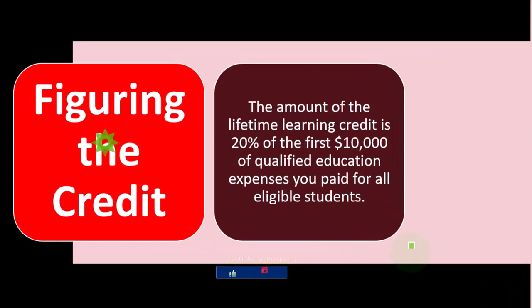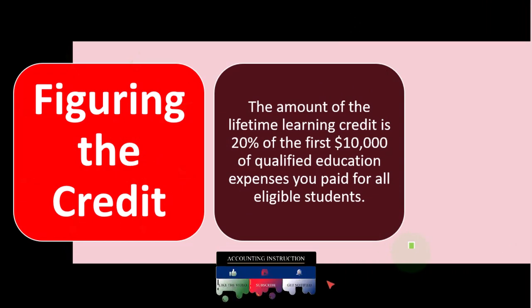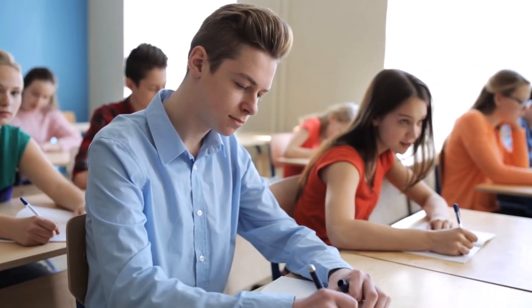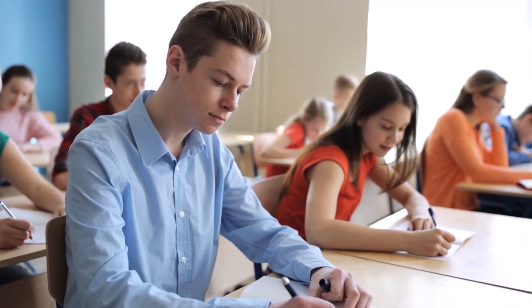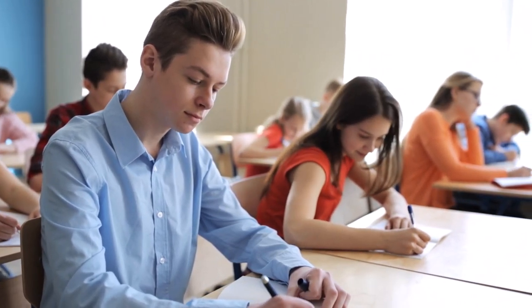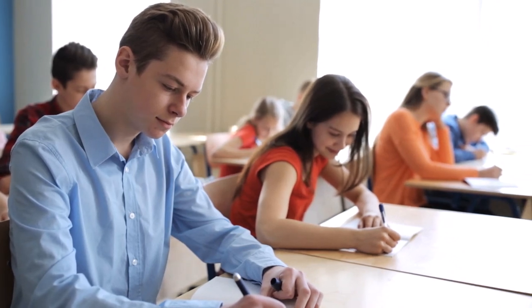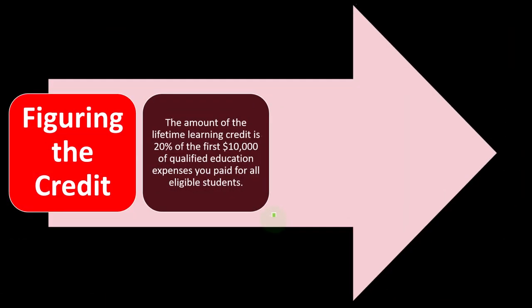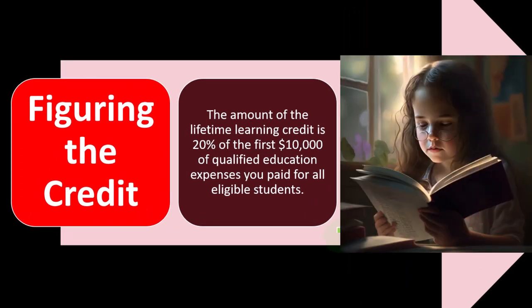Figuring the credit: we're looking at the Lifetime Learning education credit. There are two major education credits, the other being the American Opportunity Credit. Our general thought process is: first, can I qualify for the American Opportunity Credit? If not, I default to the Lifetime Learning Credit. The qualifications to get the American Opportunity Credit are more restrictive than those for the Lifetime Learning Credit.